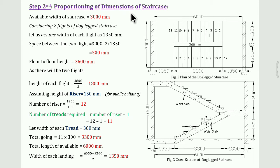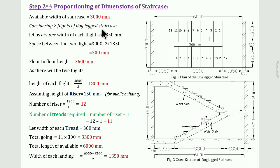Step 2: Proportioning of dimensions of staircase. This is a very important step in the design of a dog-legged staircase. Based on the given data we will now proportion the dimensions. The available width of staircase is 3000 mm. In a dog-legged staircase the width is divided by two for the two flights: 3000 divided by 2.